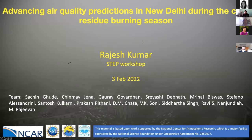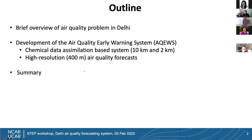The image in the background shows one of the polluted days in Delhi — you can see Connaught Place, the business center, during daytime, but you can't even differentiate whether it's evening or daytime. These pollution events inspired the development of this system. I'll give a brief overview of the air quality problem in Delhi, then cover two phases of the air quality early warning system development, and finally a summary.